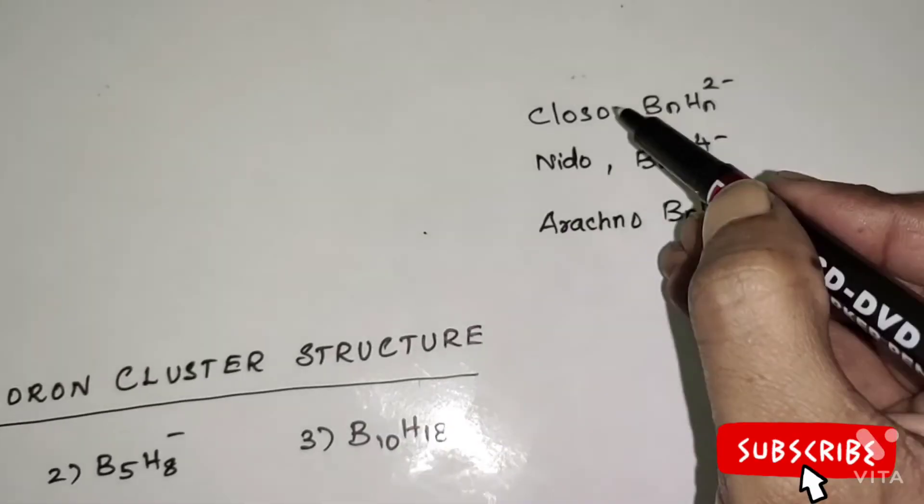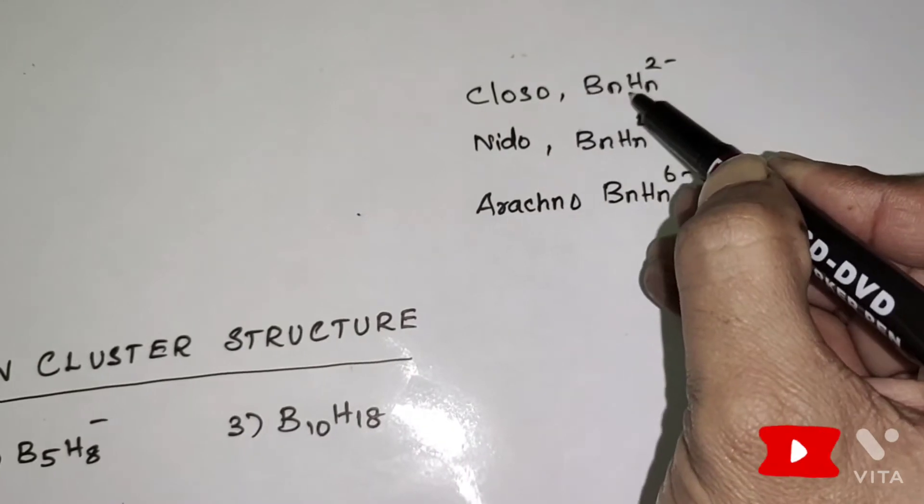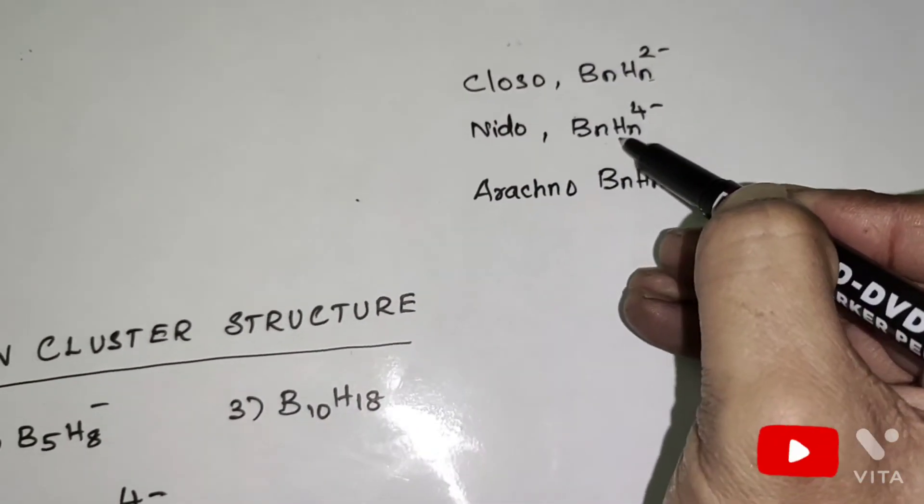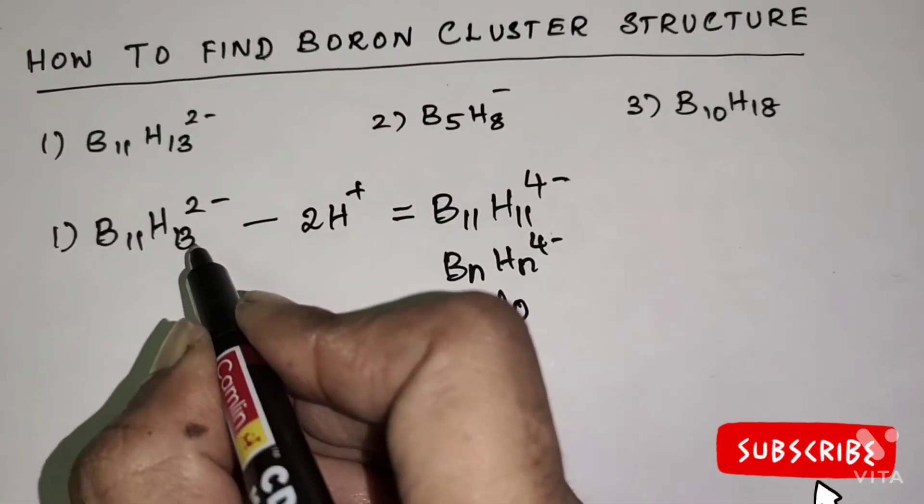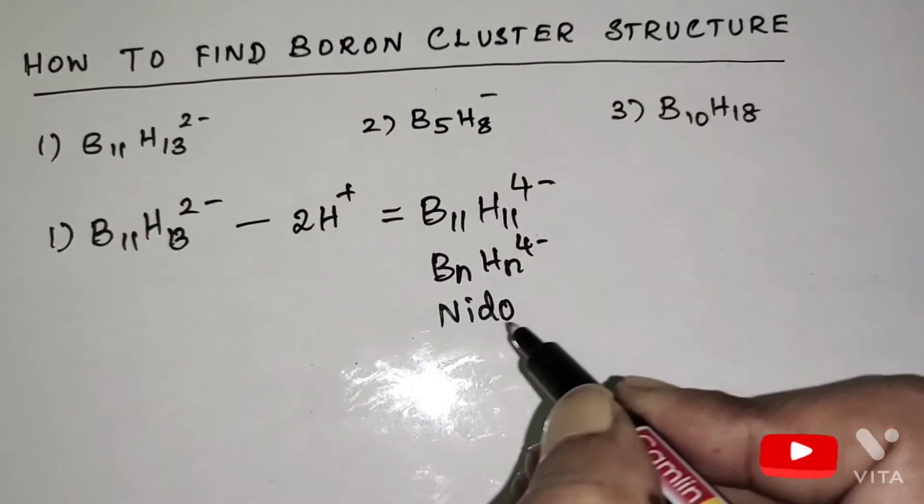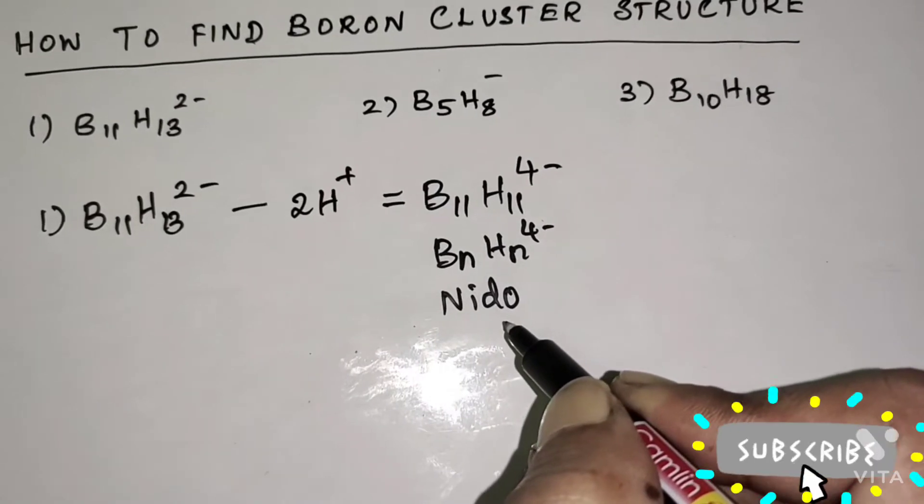Listen. Closo compound is BnHn two minus. Nido, BnHn four minus. Therefore, B11H13 two minus is in Nido cluster structure.